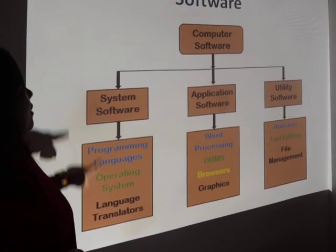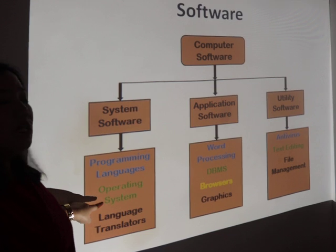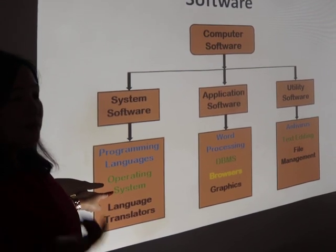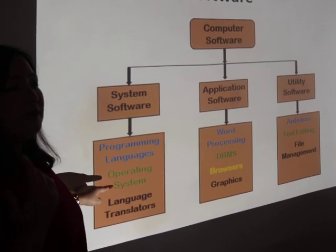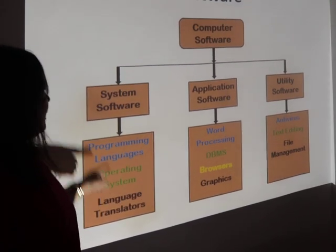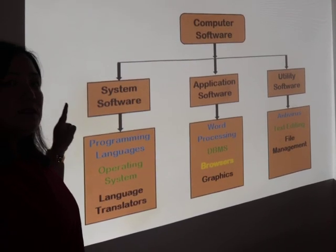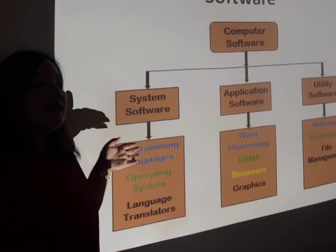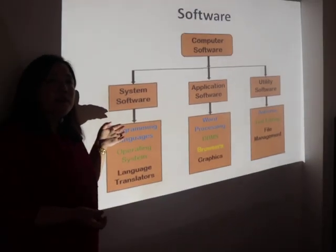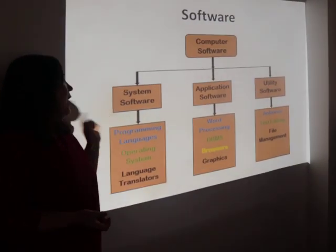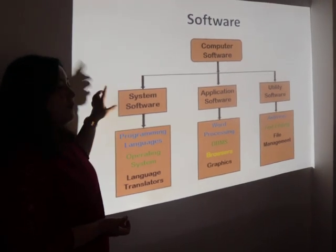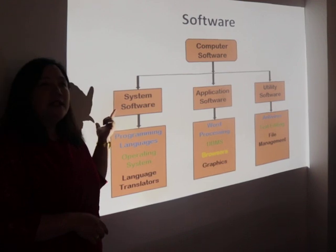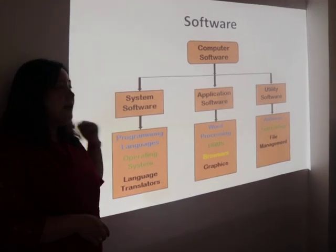One of the most common examples of system software is the operating system — like Windows Vista, Windows 7, and in terms of phones, Android. These are all examples of system software, which acts as the medium or interface between the user applications and the hardware. System software is basically inbuilt and designed by the computer manufacturers.